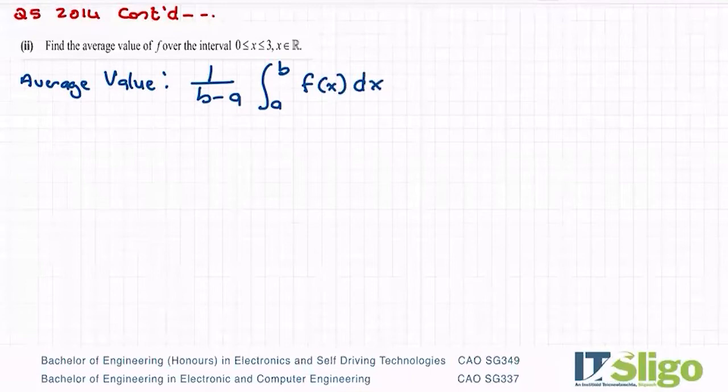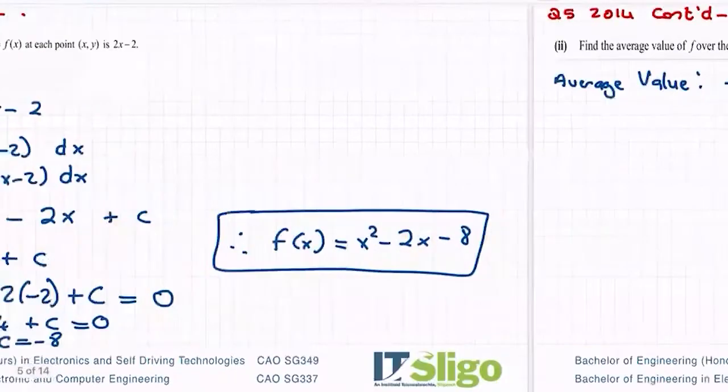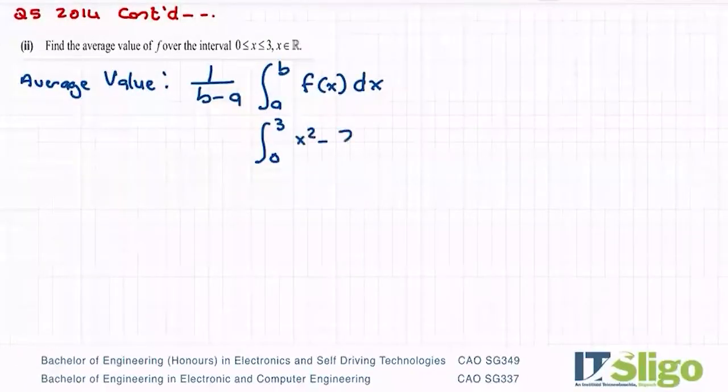So in other words, I need to put my f of x in here. b and a are the limits that you're finding the area between. So for me, my limits are 0 and 3. So let's do that. So I'm going to have, find the area between 0 and 3 of my f of x. So x squared minus 2x minus 8 dx. And then, of course, I need my 1 over b minus a here.